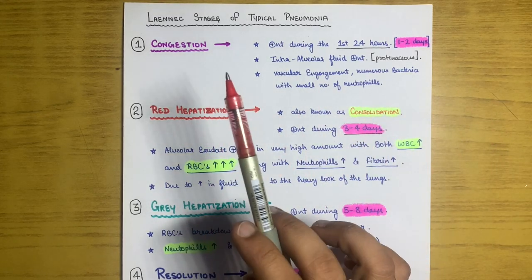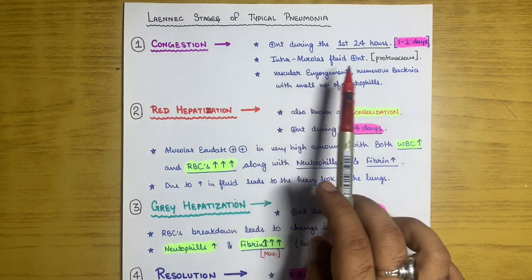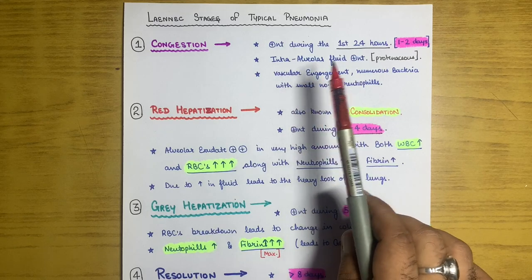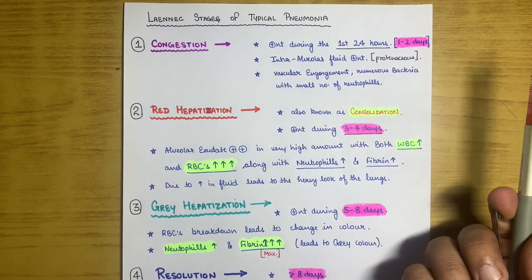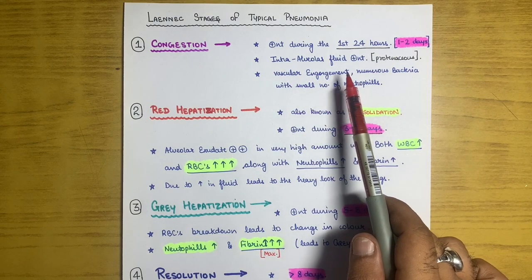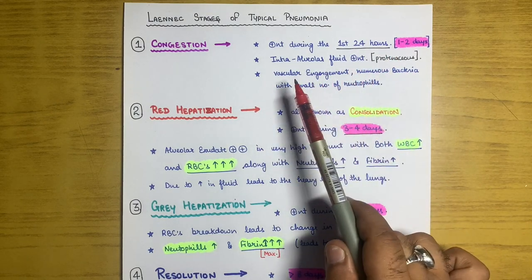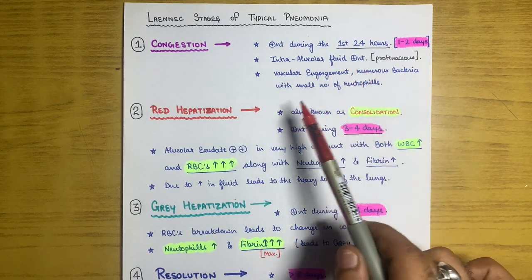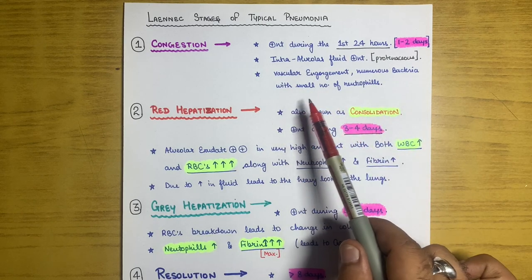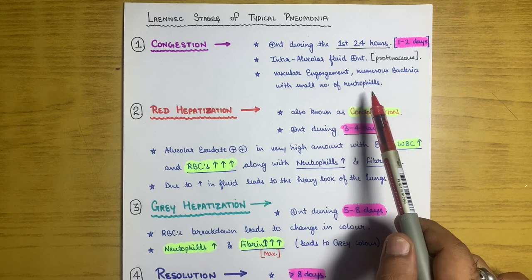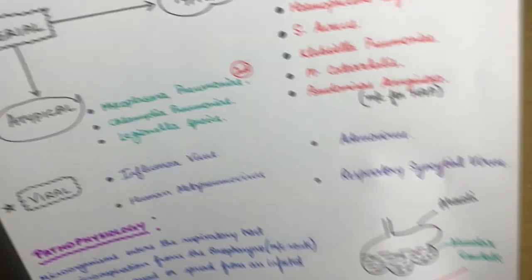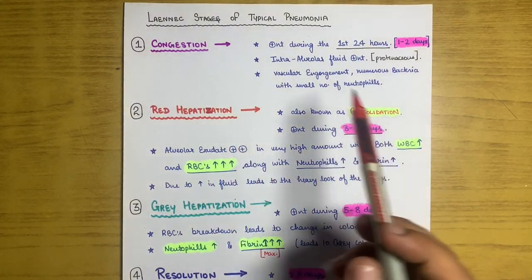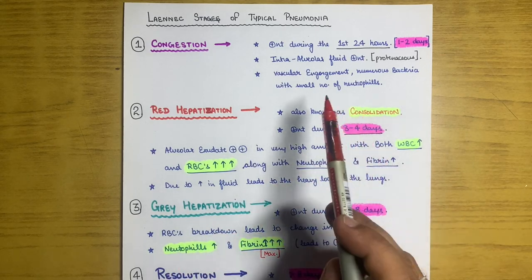The first stage is congestion, present during the first 24 hours to one to two days. Intra-alveolar fluid is present and is proteinaceous in nature. There is vascular engorgement and numerous bacteria with a small number of neutrophils, as the alveolar exudate mainly consists of neutrophils.